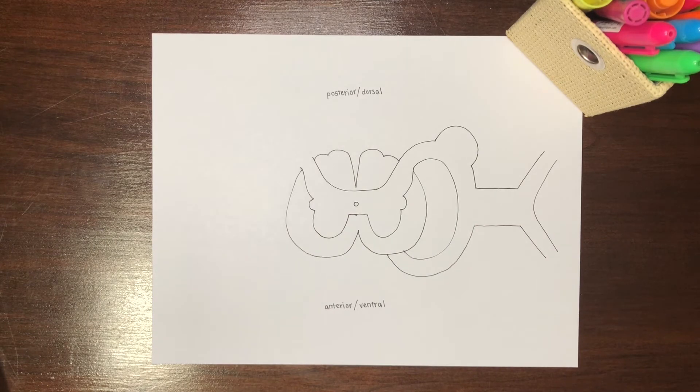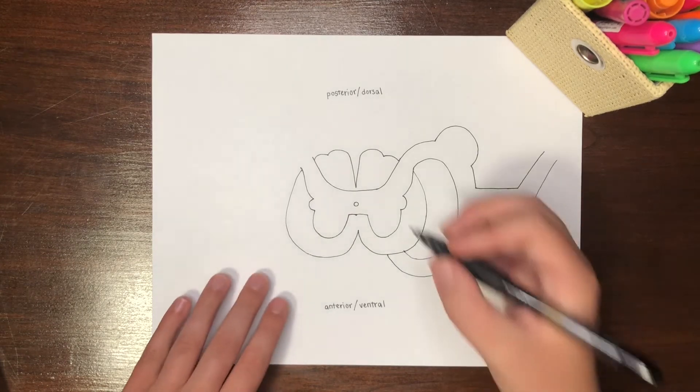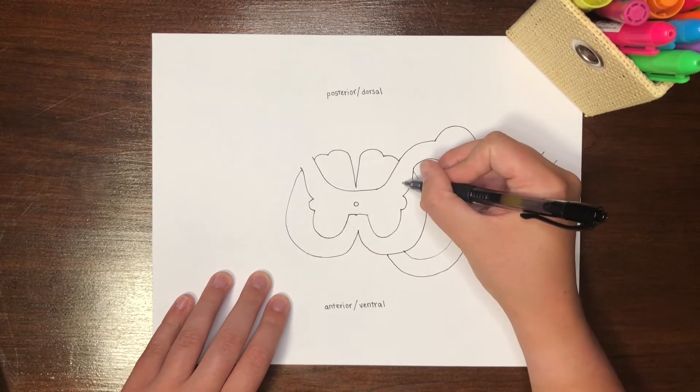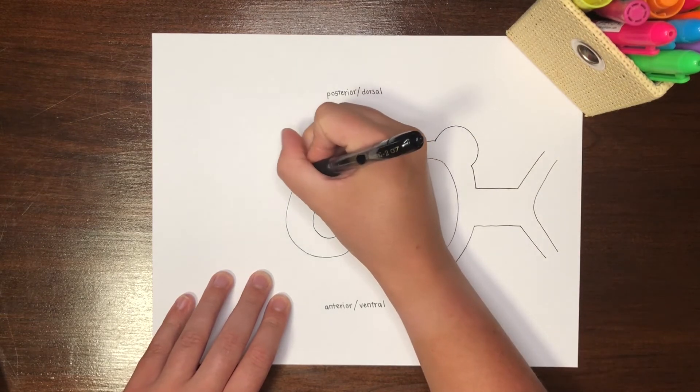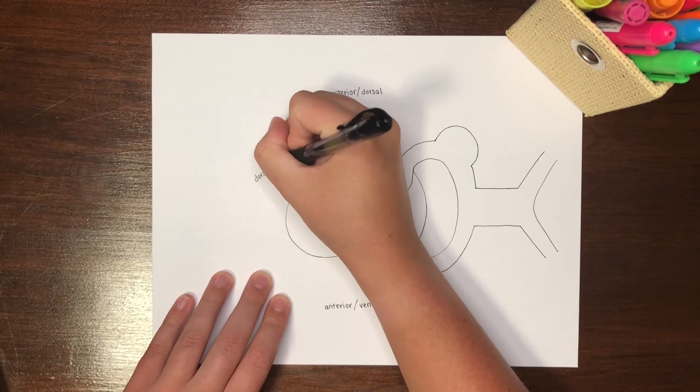The internal butterfly shape is composed of gray matter. Gray matter contains collections of neuron cell bodies. The different sections of this shape are named for their location. First, the dorsal horn is posterior.